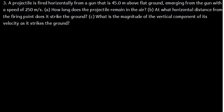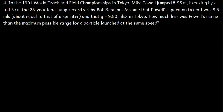in the 1991 World Track and Field Championships in Tokyo, Mike Powell jumped 8.95 meters, breaking by a full 5 centimeters the 23-year long jump record set by Bob Beamon.